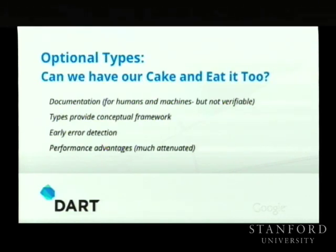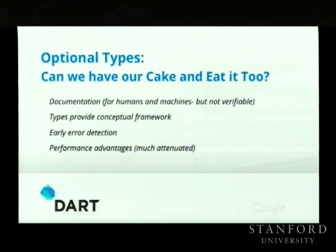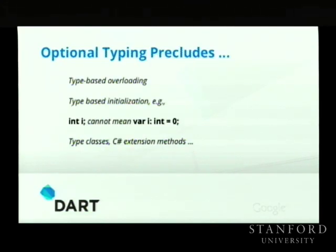There is an issue with the brittleness of mandatory typing: the overwhelming temptation to rely on it for everything — for security, for optimization. The experience I've had in the Java platform where everything relies on that thin layer of typing, and that thing collapses — it doesn't actually work. Optional types is kind of a have-your-cake-and-eat-it-too approach. We get the documentation, admitting it might not be correct. We still get the conceptual framework. We often do get early error detection. And sometimes we can squeeze some performance out of this because it's sometimes easier to prove something given these annotations than to infer them.